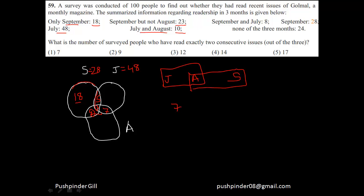July and September will not count as two consecutive months because August is in between. So July and August is seven people. He's saying exactly two, so the three people who read all months — July, August, and September — will not be included because they read more than two magazines. So it's only July and August, which is seven, then only September and August, which is two. That means a total of nine people have read the magazine for exactly two consecutive issues. The trick is you might have given your answer as 14, because in set theory exactly two out of three is 14, but he's saying exactly two consecutive months — July and August, and August and September — not July and September.